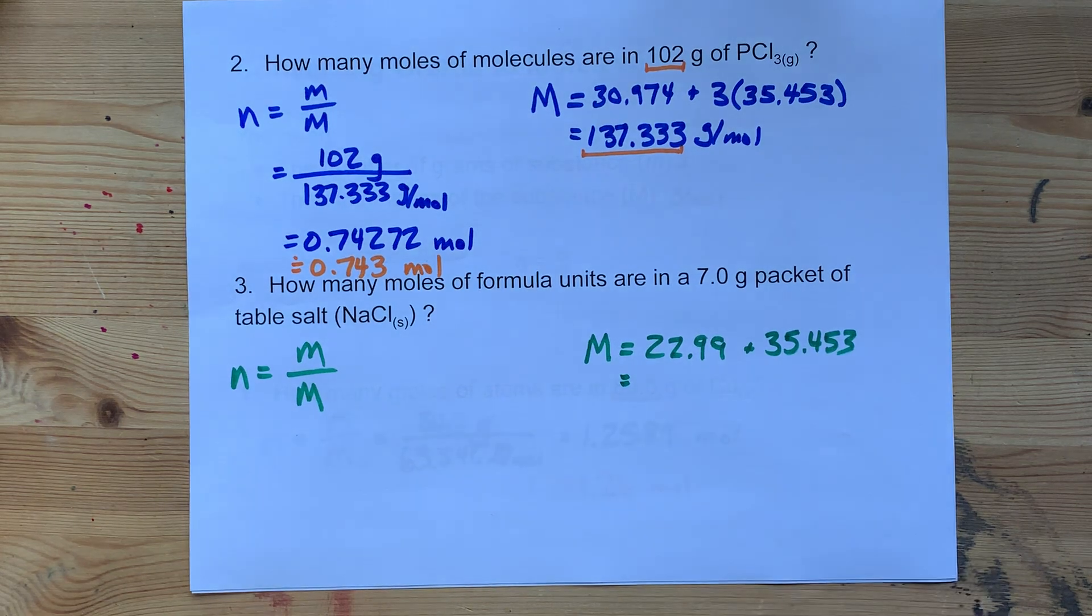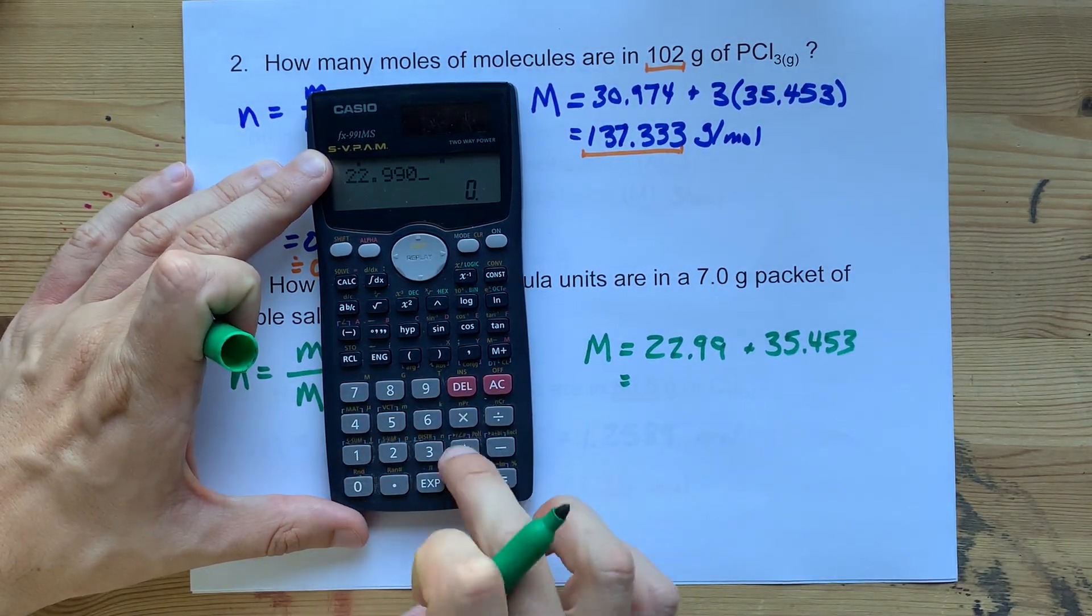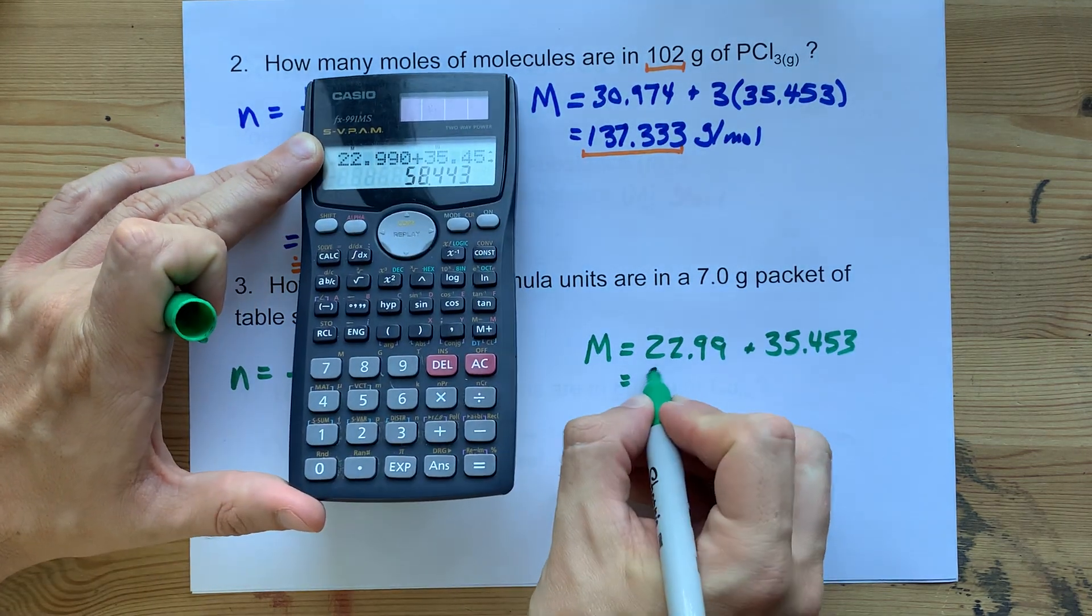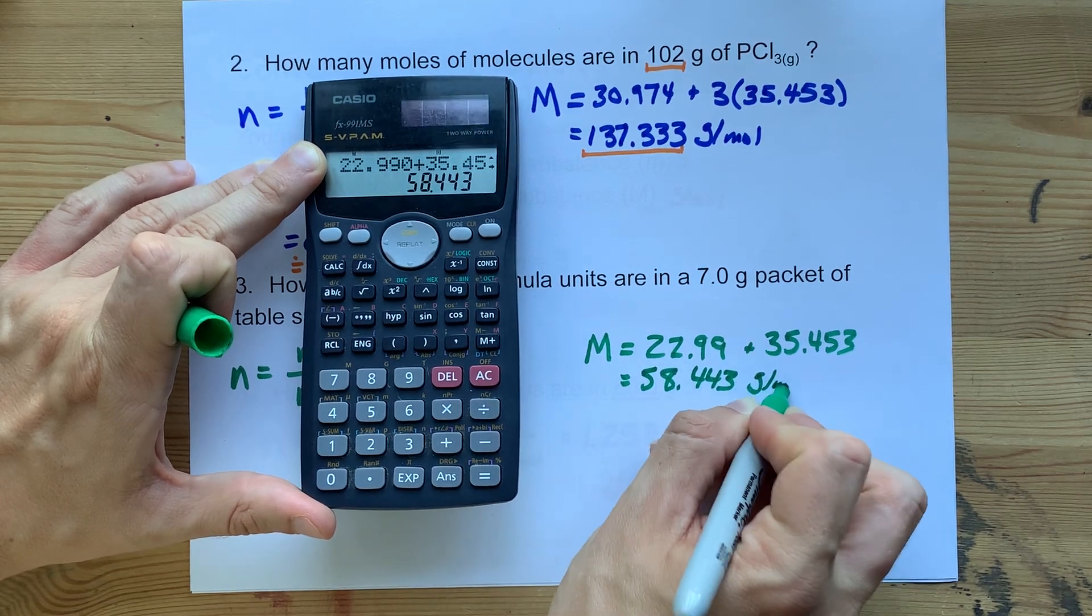Combine those two together. 22.990 plus 35.453. That's 58.443 grams per mole.